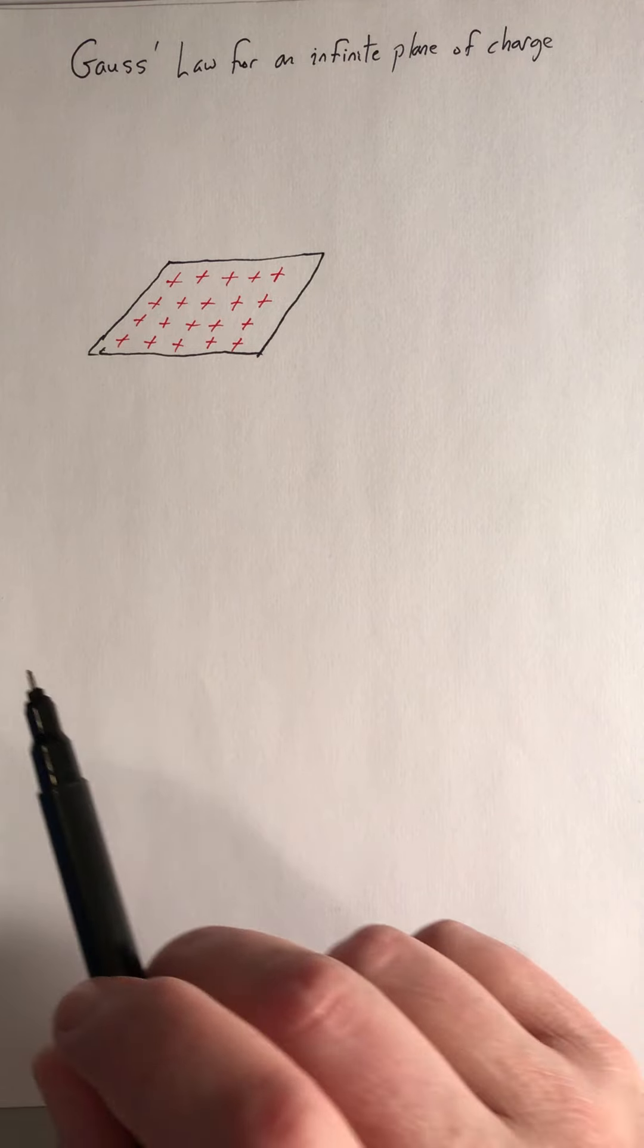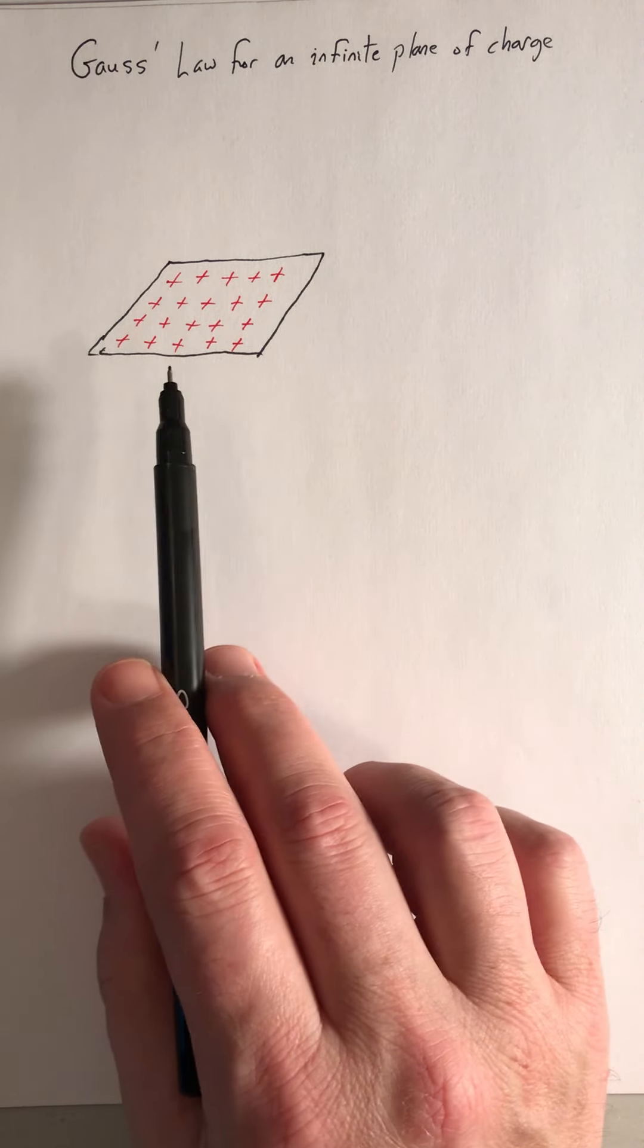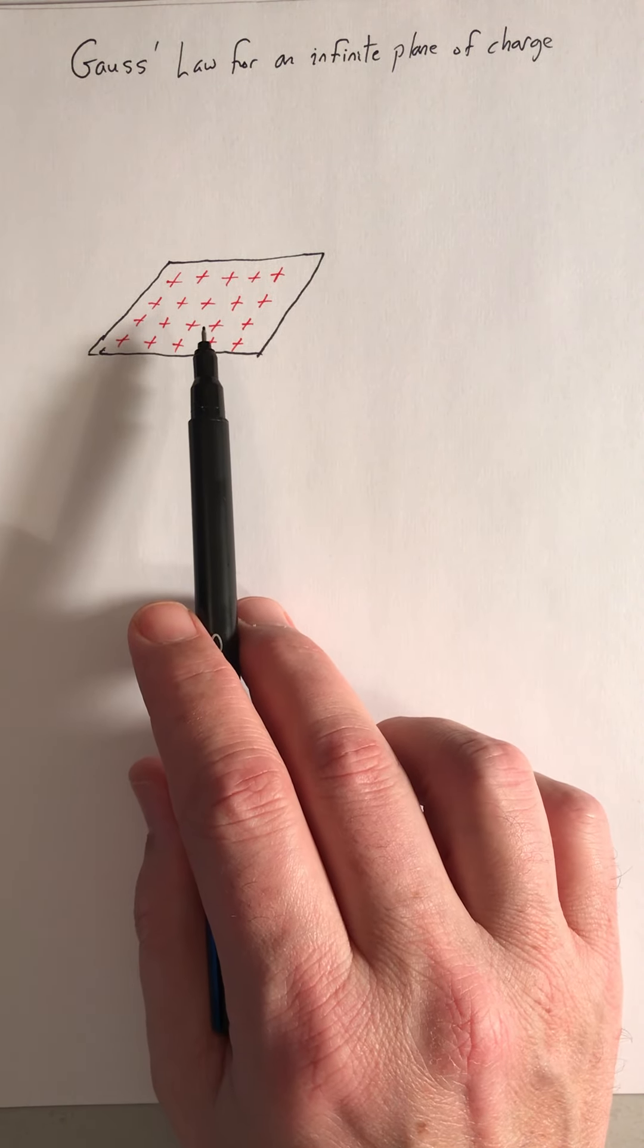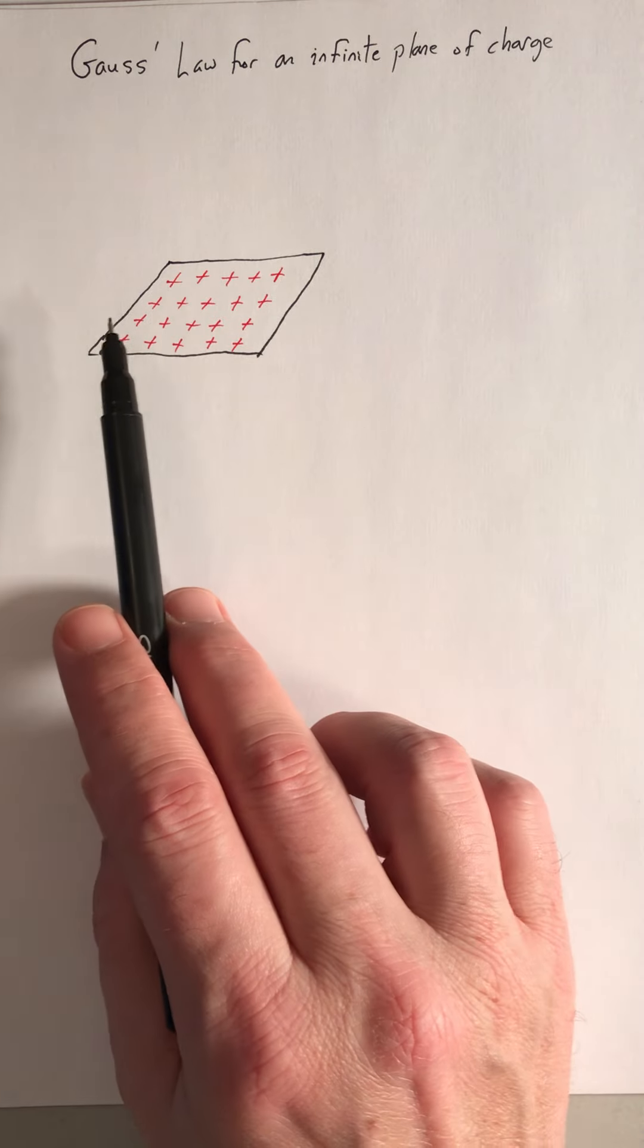Again, we're picking an infinite sheet because it actually simplifies the problem in the computations. There's a symmetry that anywhere I pick on the sheet I have just as much sheet to the left and the right and the back and the front if it's infinite.